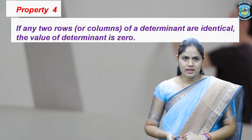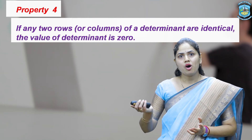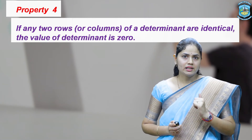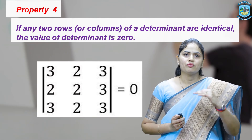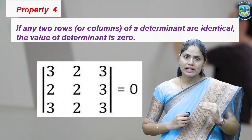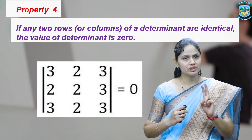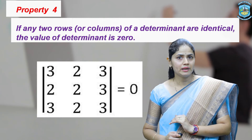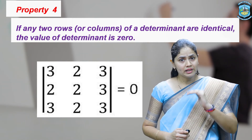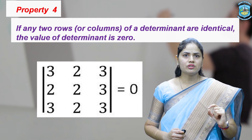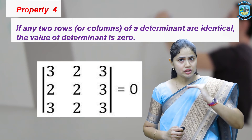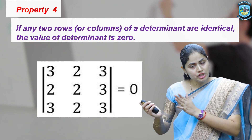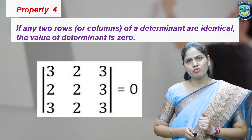The next property is: if any two rows or columns of a determinant are identical, then the value of the determinant is 0. In this example, the first and third rows have the same elements: 3, 2, 3. The positions also match — the first element in both rows is 3. Since these two rows are identical, the value of the determinant is 0. Similarly, if any two columns are the same, the determinant will be 0.